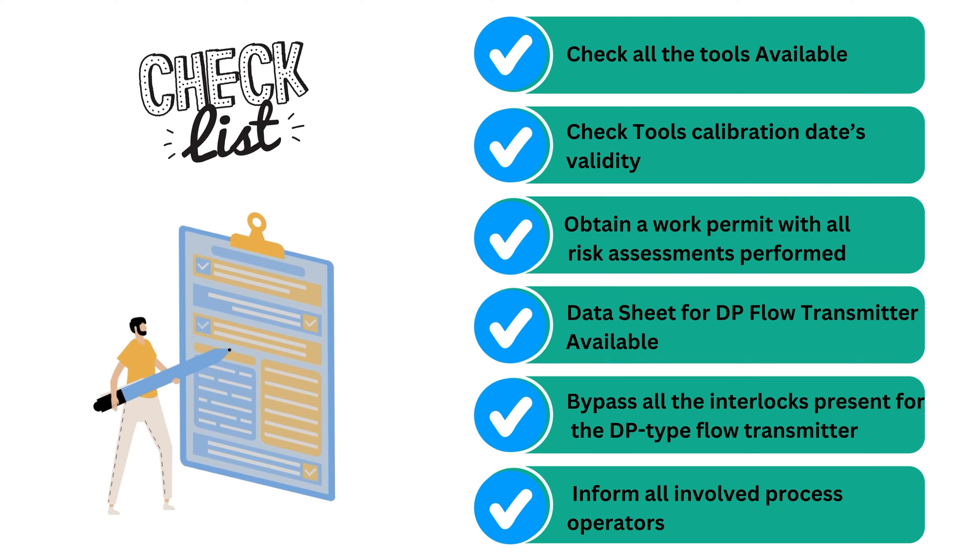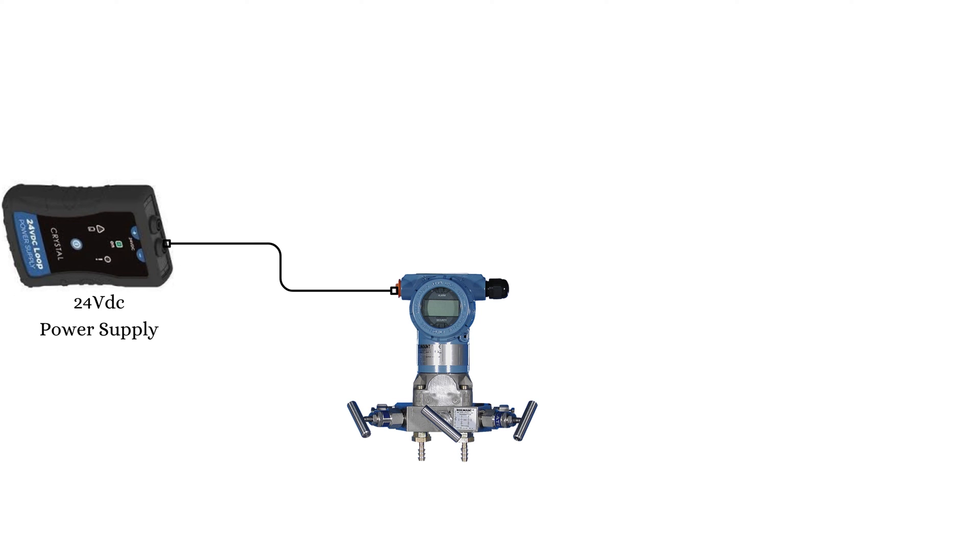The DP type flow transmitter calibration procedure: when all the preparatory work has been completed, we can now start calibrating the DP flow transmitter. Arrange all the tools. The DP type power transmitter can be powered through the field cables connecting the DP transmitter to the system or by using an external power supply.